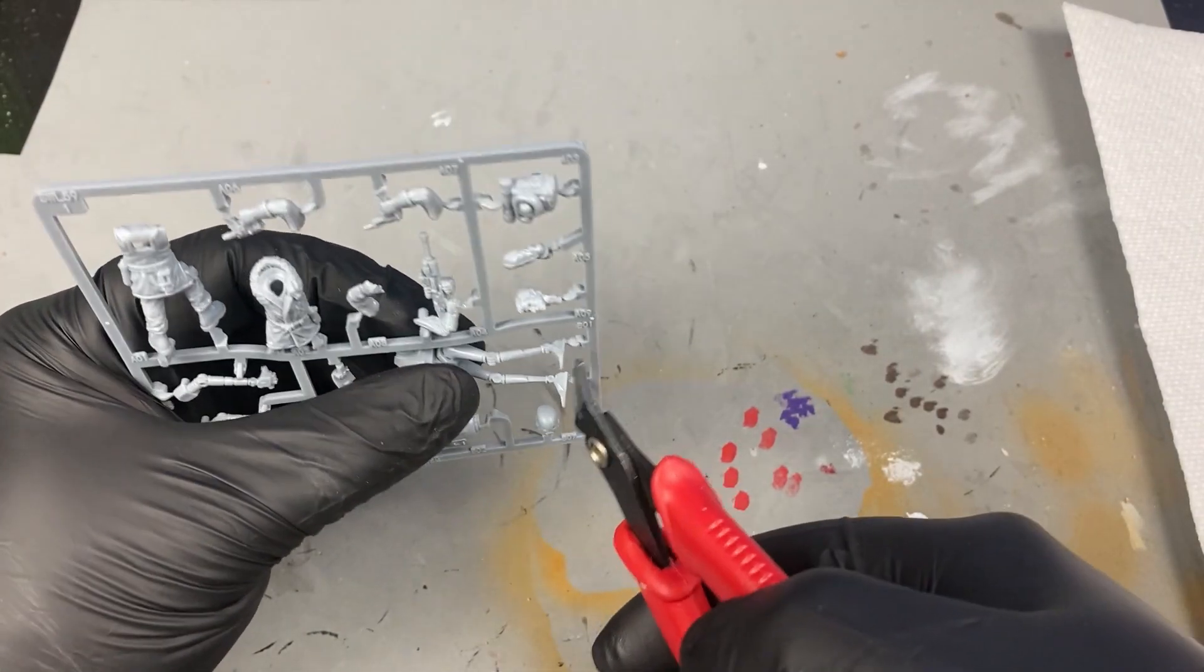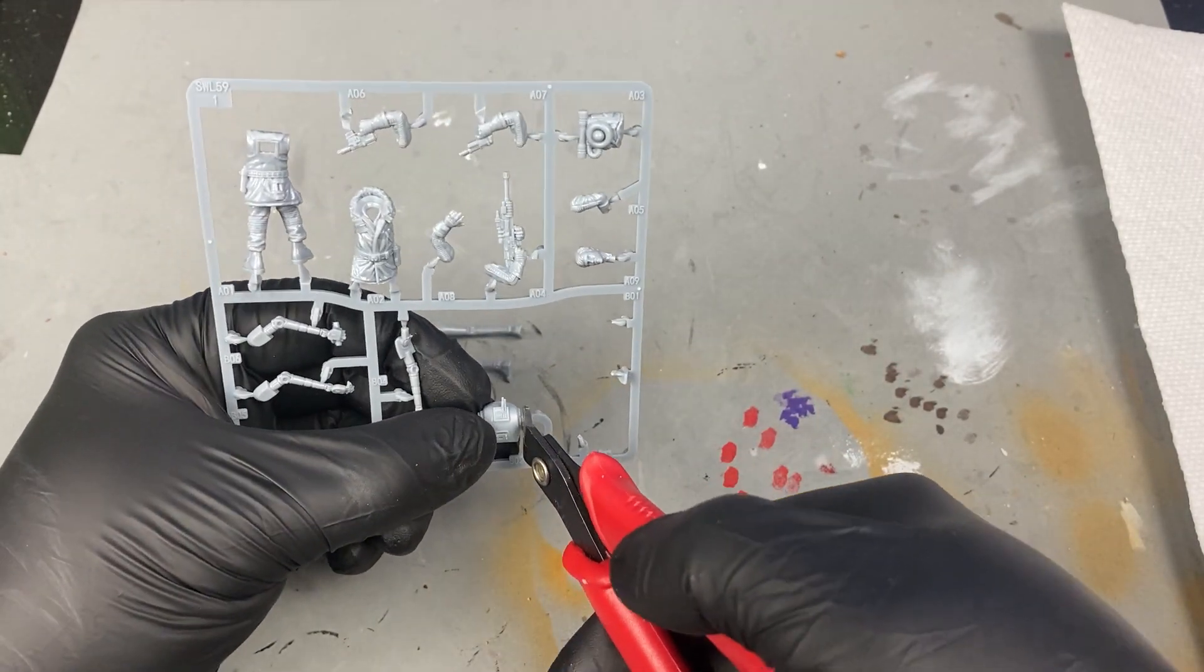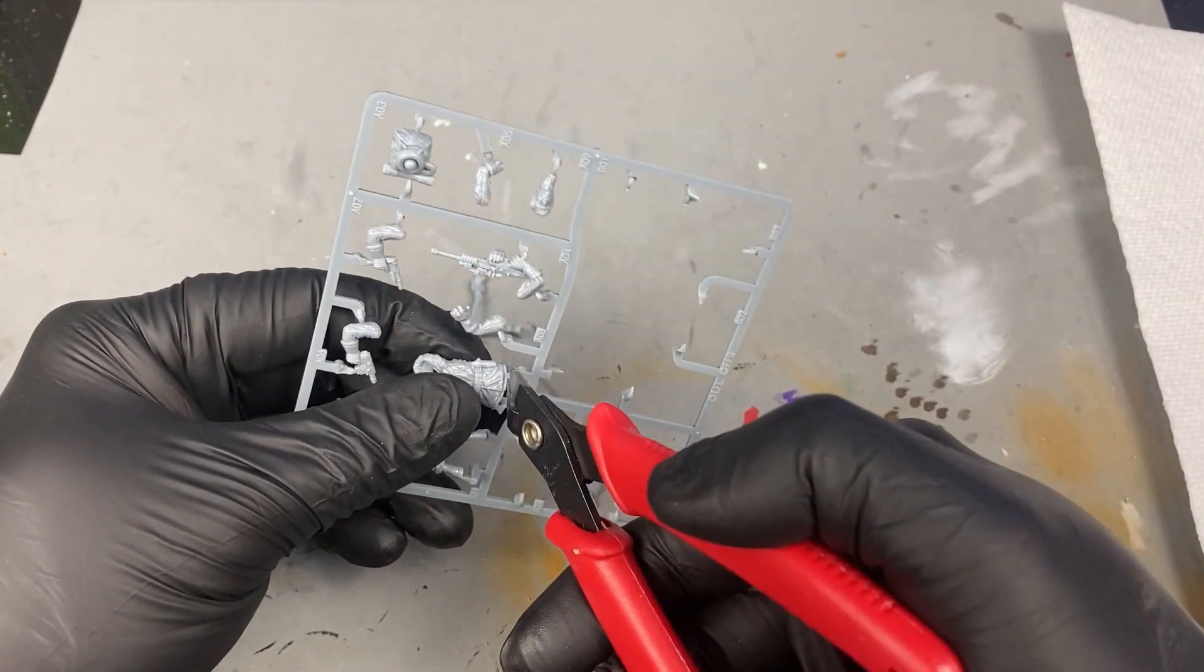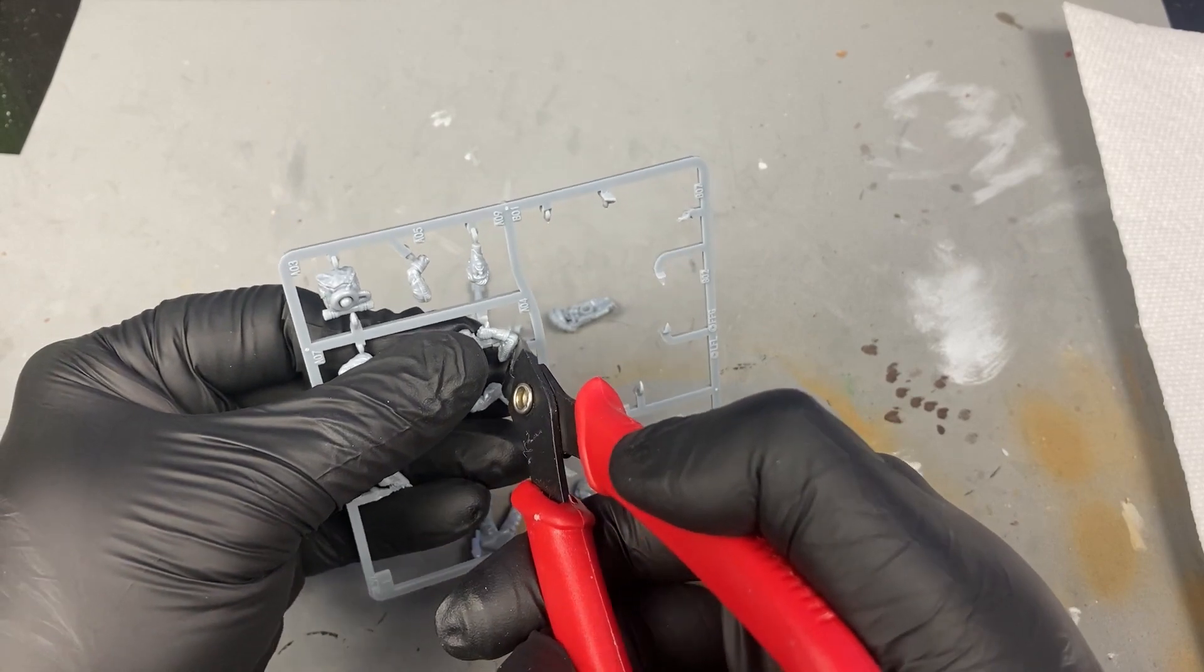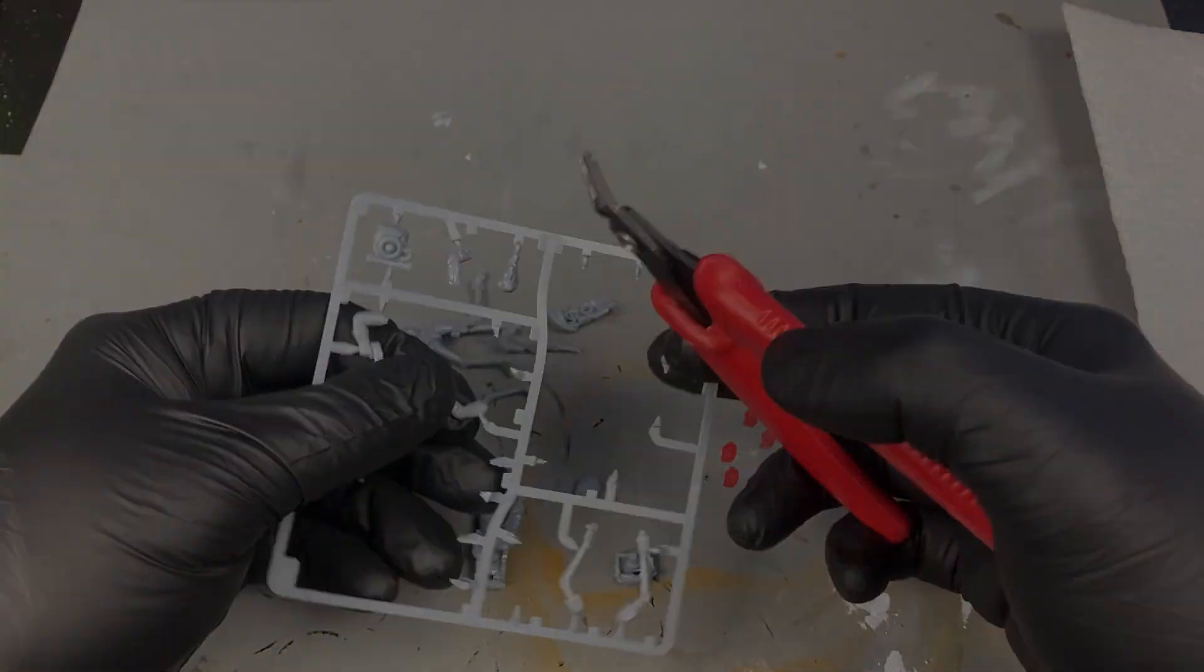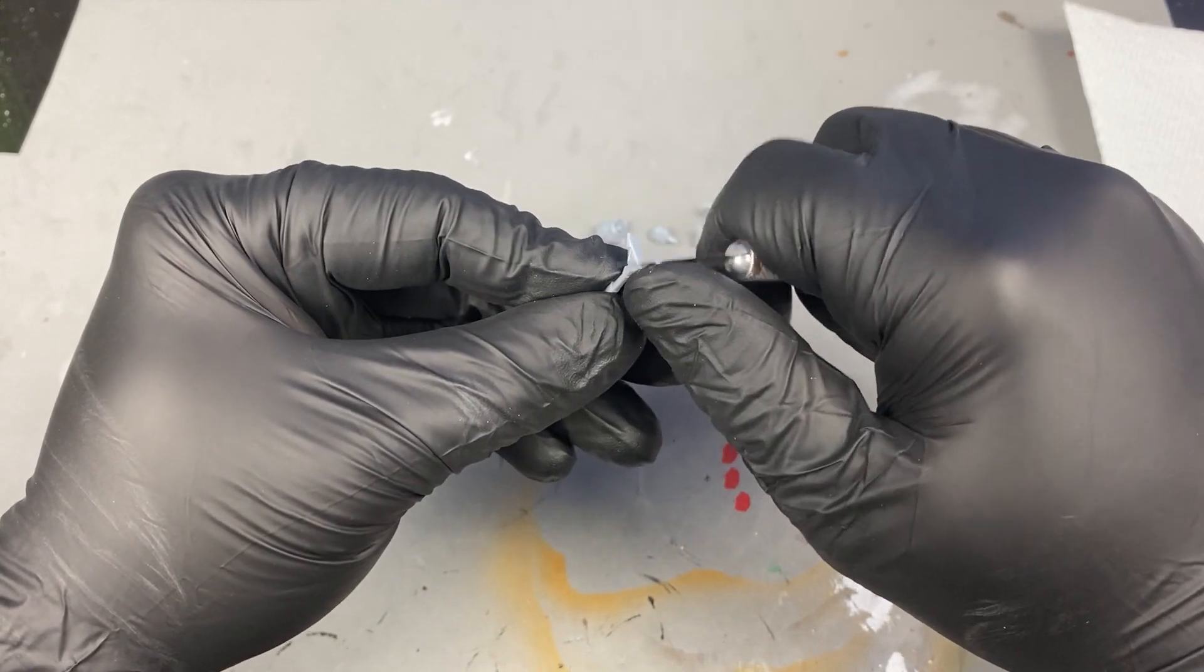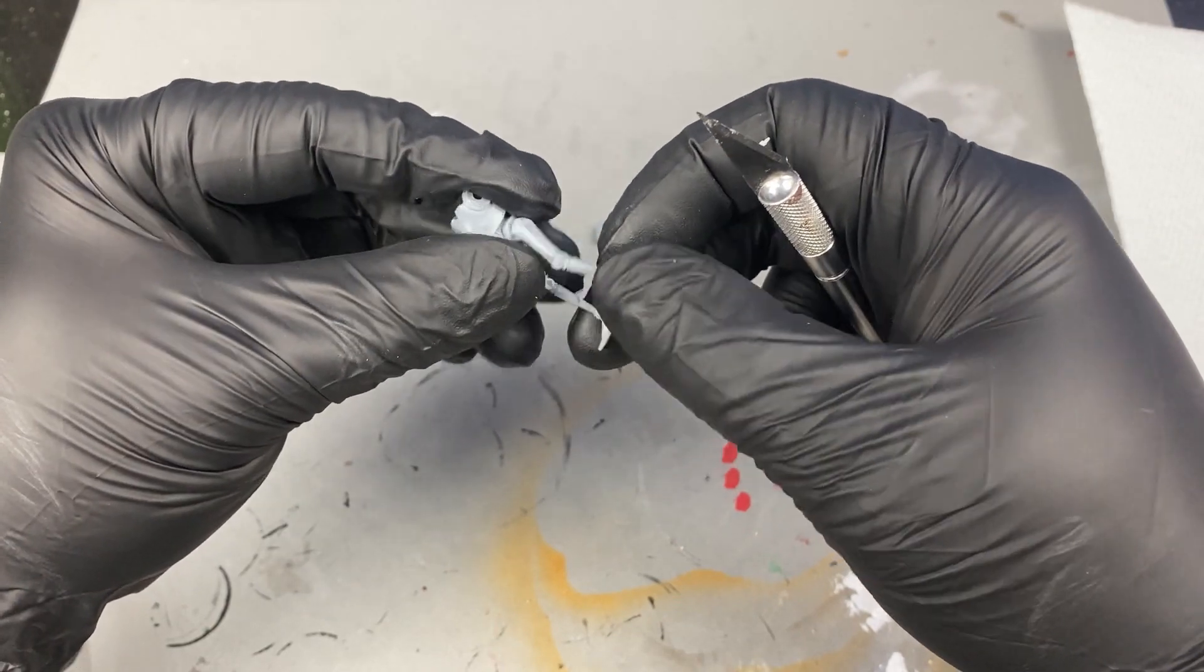Start out by removing the model pieces from the sprues. Their numbers coordinate to the diagrams in the book. Clip the model as close as you can without actually damaging the model itself. Once you clip them, we're going to be removing the little bit of sprue that may be left with an X-Acto knife.